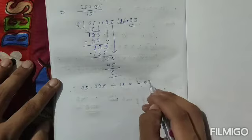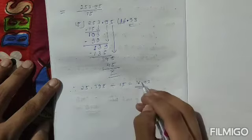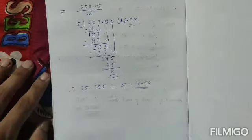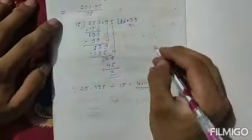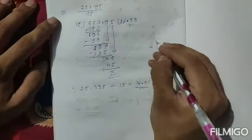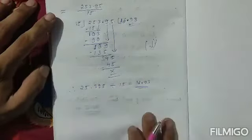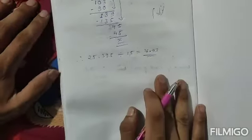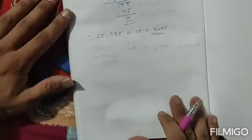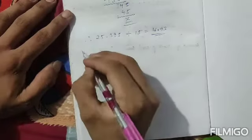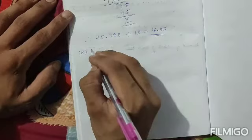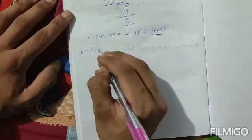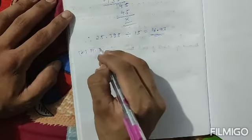So 25.395 divided by 1.5 gives the answer 16.93. In this way you have to do decimal division. Similarly, you can do question number j as your homework. Now I will do question number k.